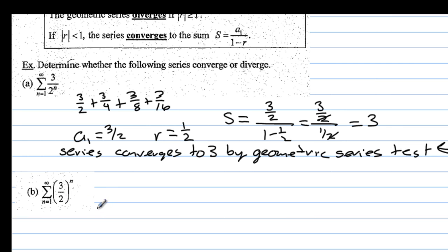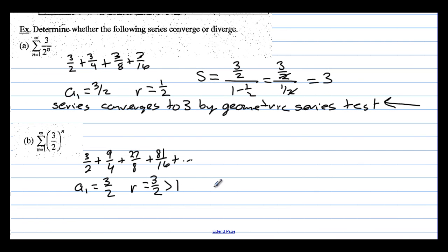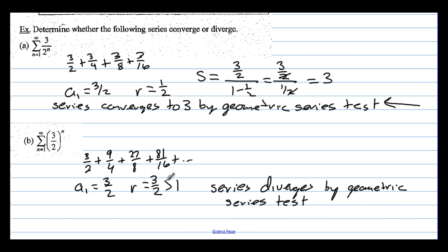For the next series, if n is 1 the first term is 3/2, then 9/4, then 27/8, then 81/16. Here a sub 1 equals 3/2 and r equals 3/2 — we're multiplying by 3/2 to get each next term. Since 3/2 is greater than 1, the series diverges by the geometric series test.